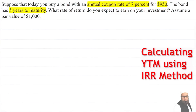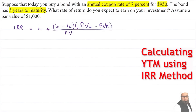We will start with the internal rate of return. The formula of the IRR is: IRR = IL + (IH − IL) × (PVL − PV_actual) / (PVL − PVH). We will use this formula to find the internal rate of return of this bond. IL is the lower interest rate, IH is the higher interest rate, PVL is the present value at the lower interest rate, PV_actual is the actual present value of the bond, and PVH is the present value at the higher interest rate. To apply this formula, we will first find the price of the bond using two different interest rates.